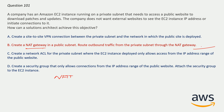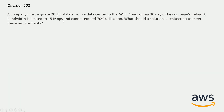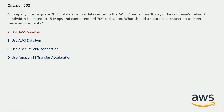Question number 102: A company must migrate 20 TB of data from a data center to AWS cloud within 30 days. The company's network bandwidth is limited to 15 Mbps and cannot exceed 70% utilization. What would a solution architect do to meet this requirement? The correct answer is option A: Use AWS Snowball, because with a 15 Mbps connection at 70% utilization it would take multiple months to transfer 20 TB of data. So using Snowball is the best option here.